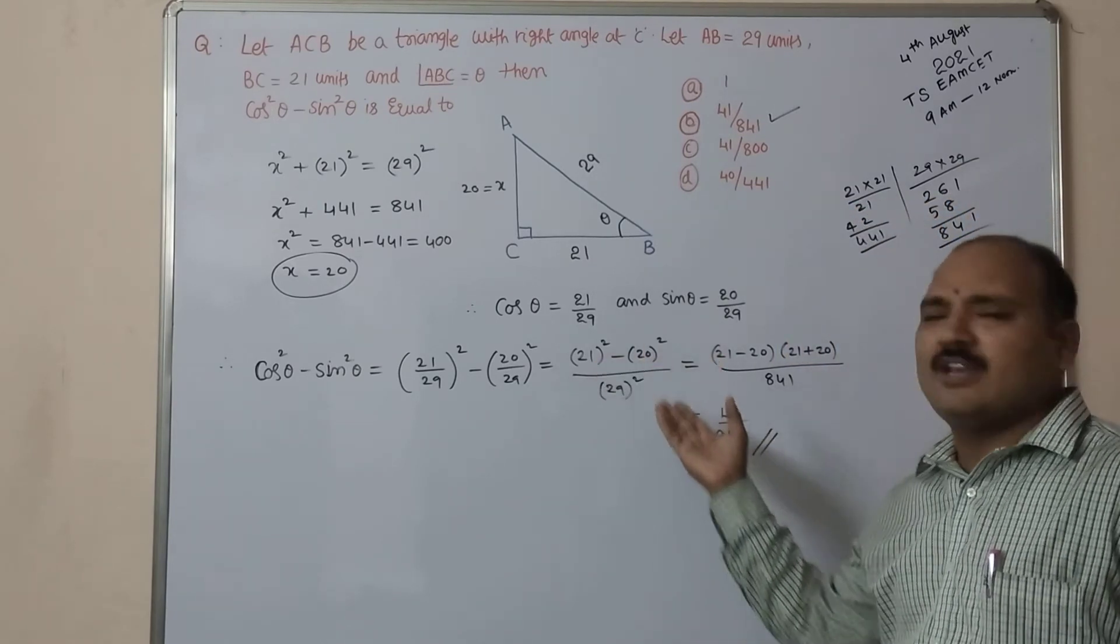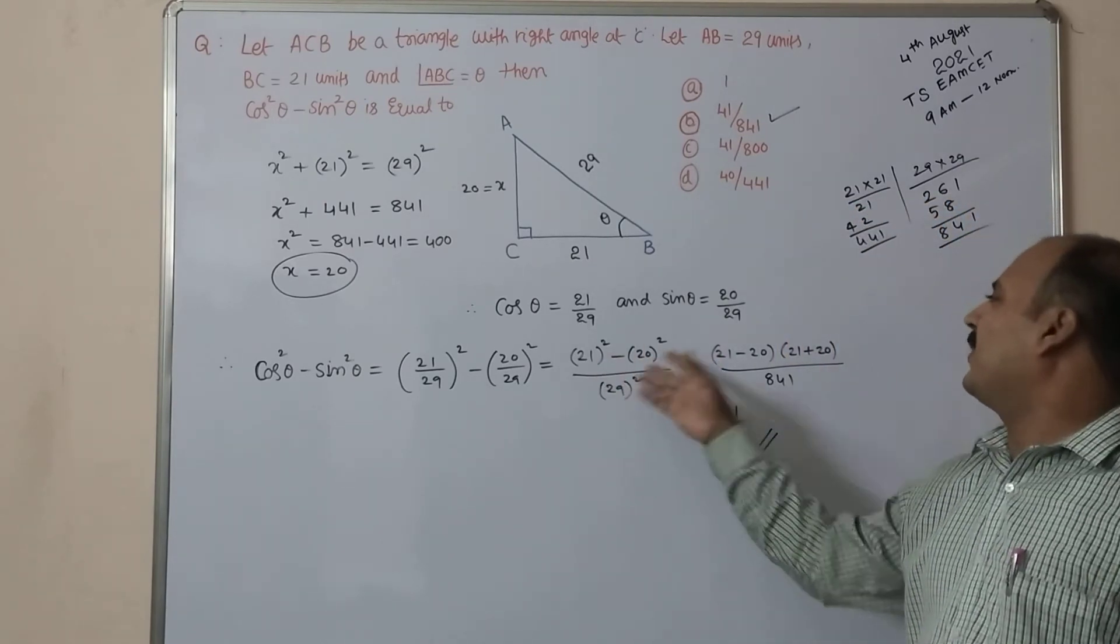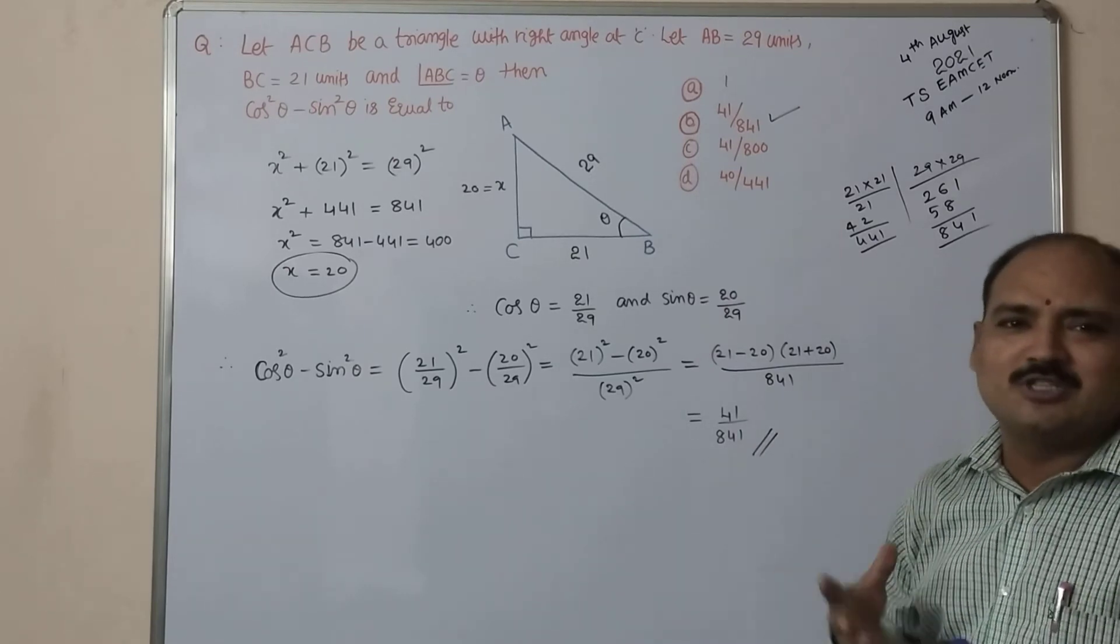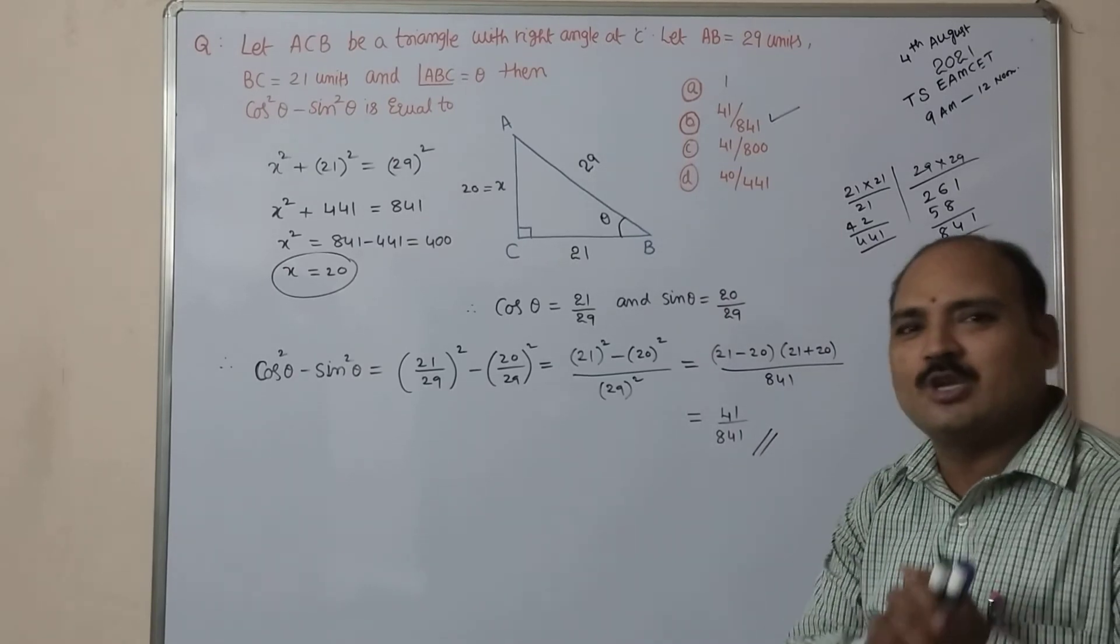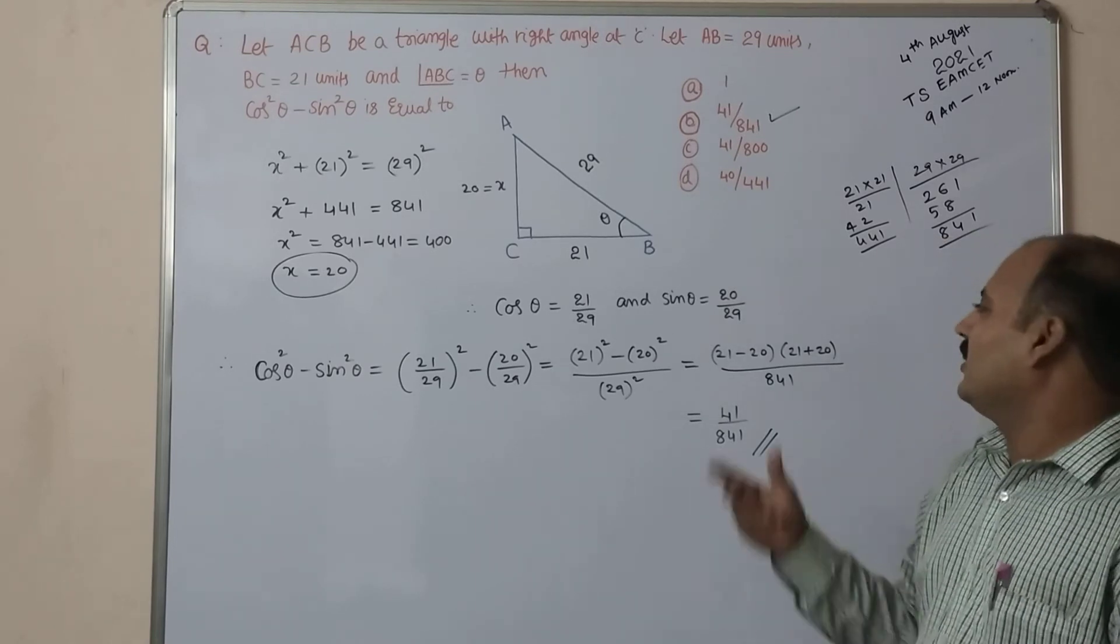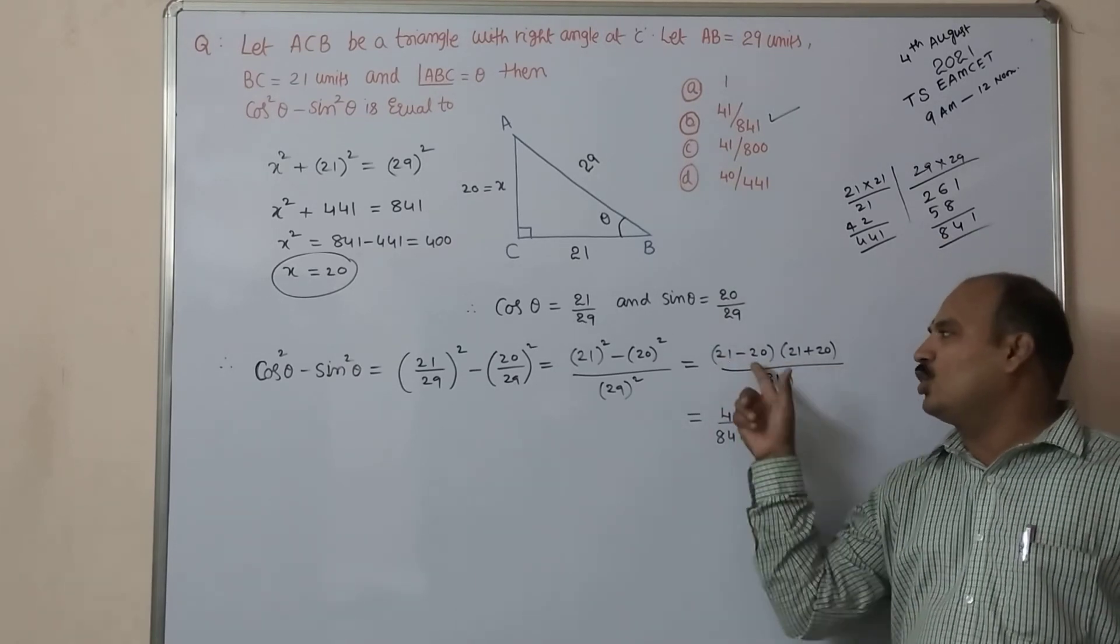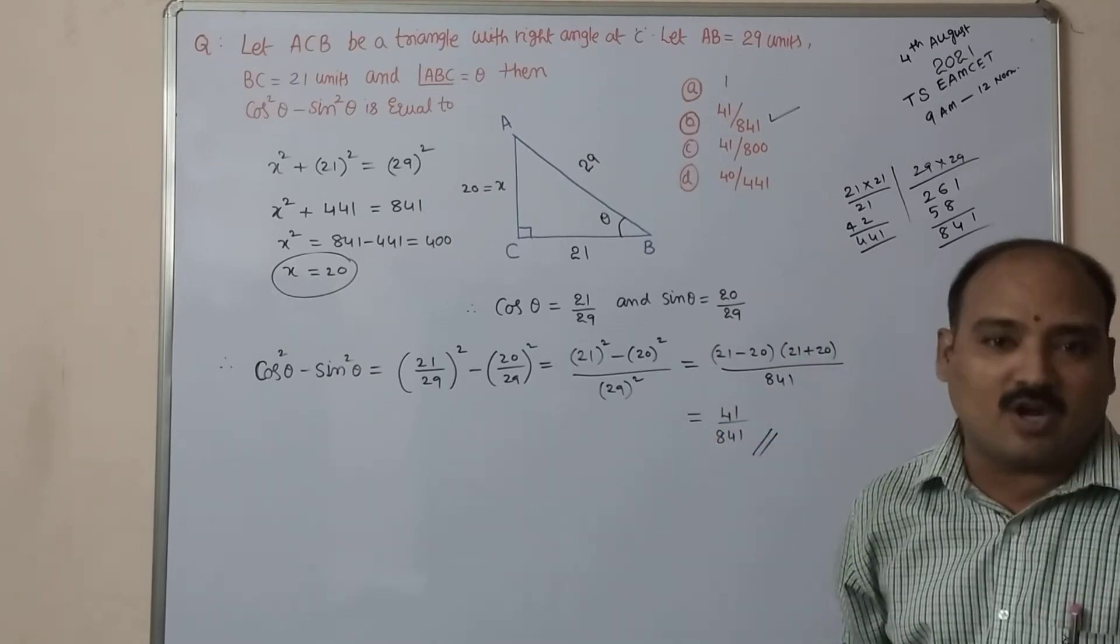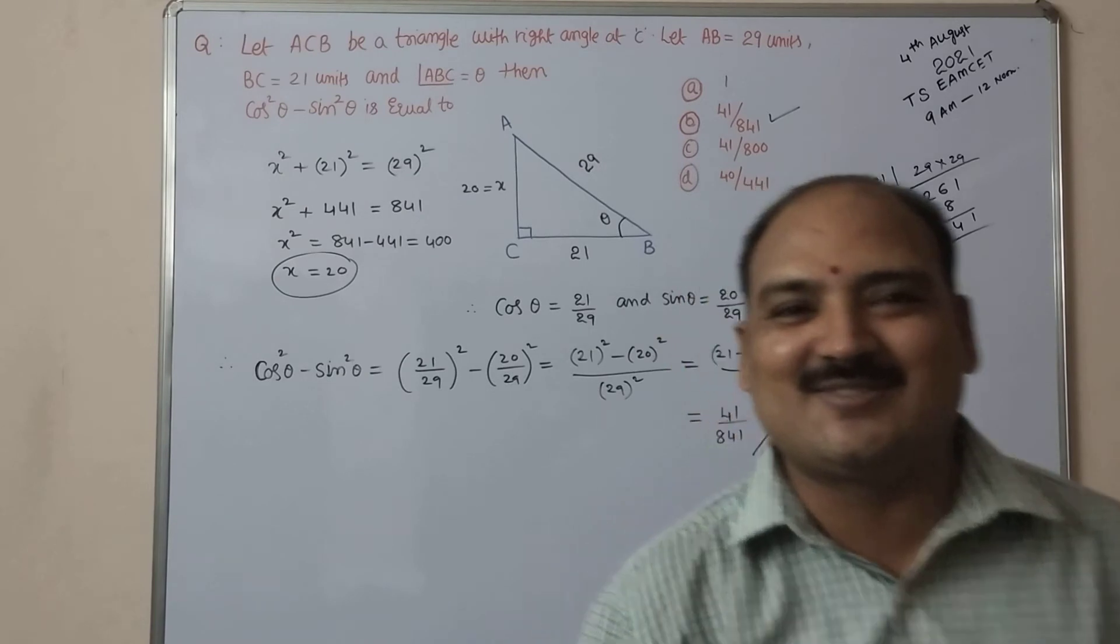As you can see here, 441 minus 400 also we can do. A+B times A-B formula apply. Why? Because we have to know the algebraic formulas. We need to apply to get the answer in the easy way. Here A-B times A+B. So 21 minus 20 is 1, don't need to write it. 21 plus 20 is 41, 41 by 841. We will move on to the next question.